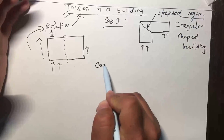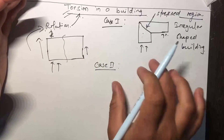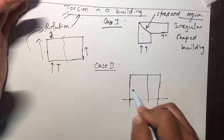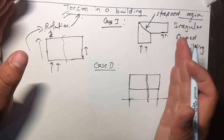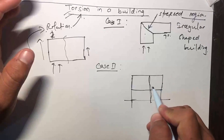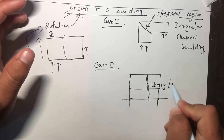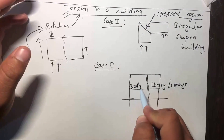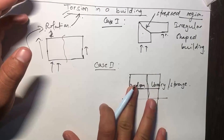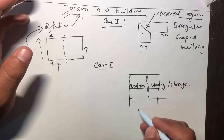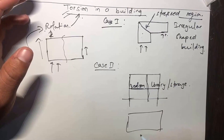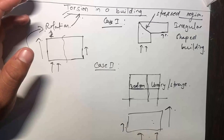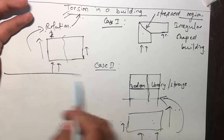Case two: suppose we have a regular building — this is the elevation — and one half of the building has higher mass compared to the other. For example, one half might be a library, storage room, or machine room, while the other half is just a bedroom. Due to this asymmetry in mass, when a lateral load acts on this building, one portion undergoes more displacement than the other, and due to this reason the building also suffers torsion.